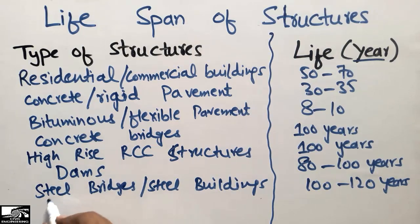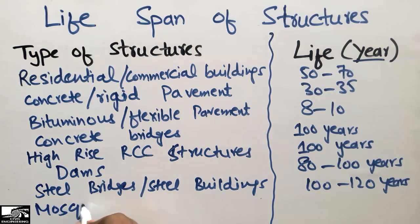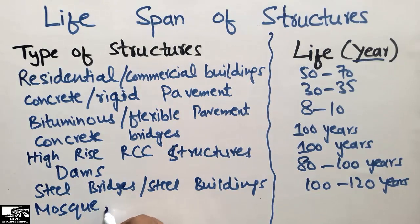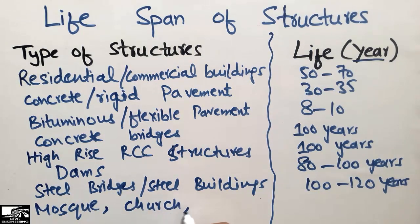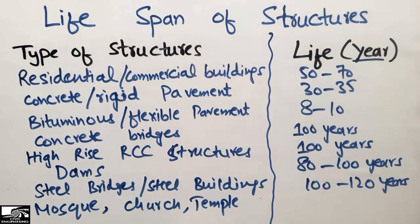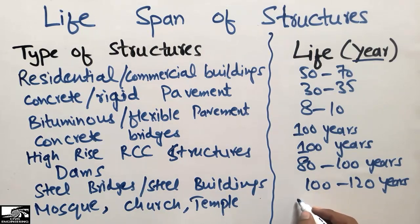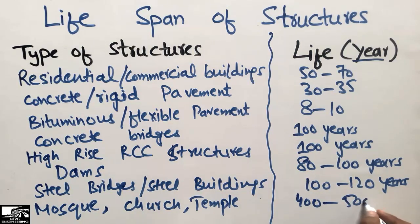Monumental structures — such as mosques, churches, and temples — have the longest lifetime. These monumental structures have a life expectancy of 400 to 500 years.